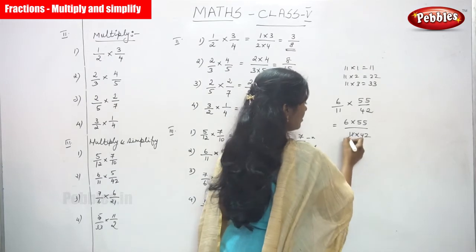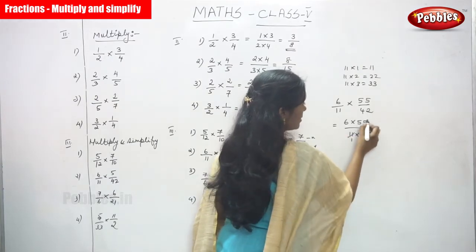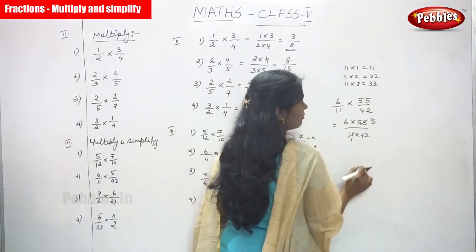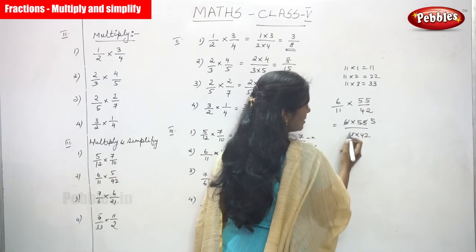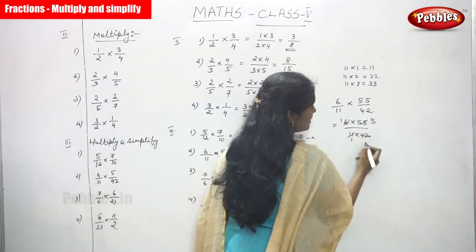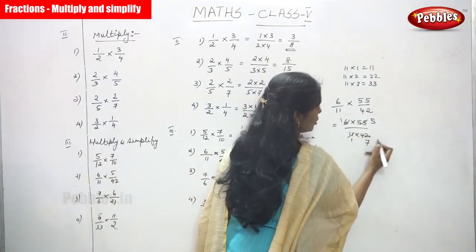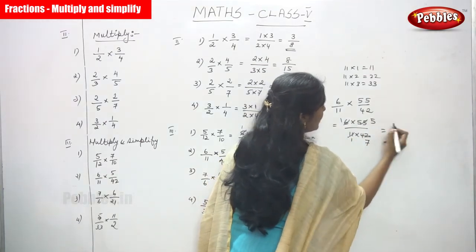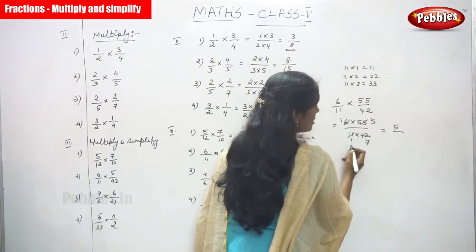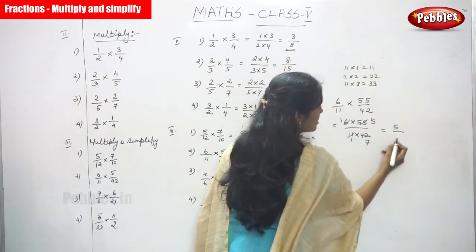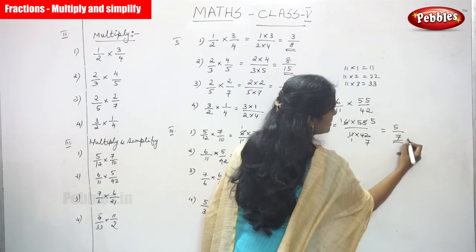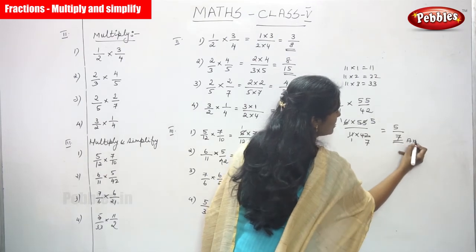Cancel with 11: 55 ÷ 11 = 5 and 11 ÷ 11 = 1. Then cancel with 6: 6 ÷ 6 = 1 and 42 ÷ 6 = 7 (since 6 × 7 = 42). So we get 1 × 5 in the numerator = 5, and 1 × 7 in the denominator = 7. The answer is 5/7.